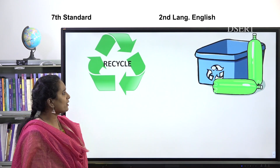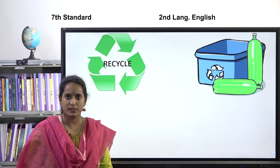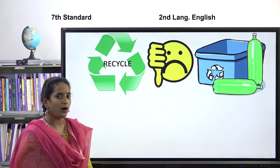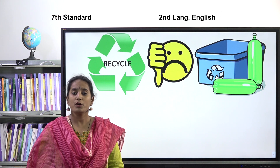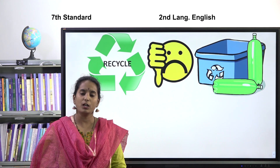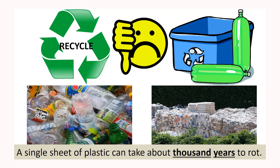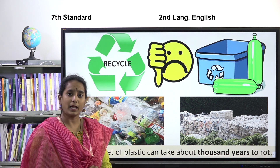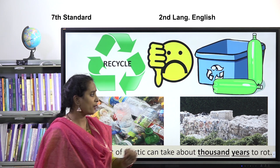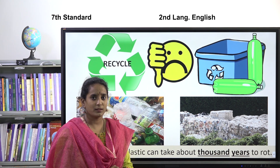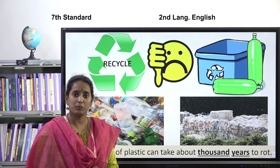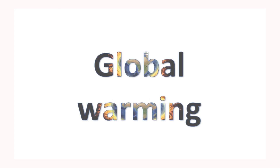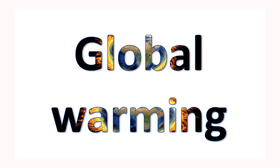Even the recycling of plastic causes a lot of problems, as it degrades the quality of plastic and demands the production of more plastic to manufacture the original product. A single sheet of plastic can take about a thousand years to rot. Just look at the pile of plastic lying here — can you imagine how many years it would take for this pile to rot? We just can't even imagine.